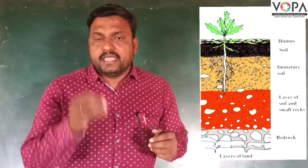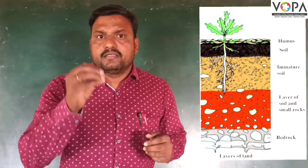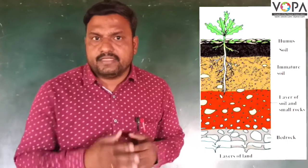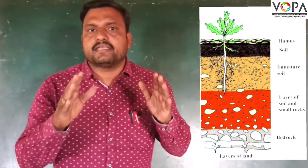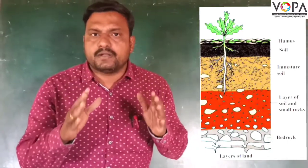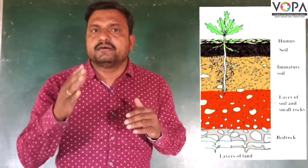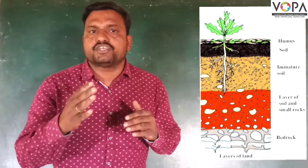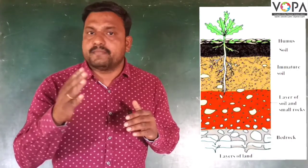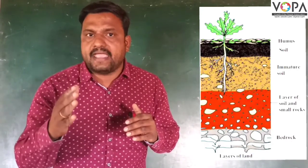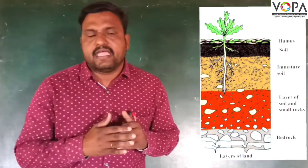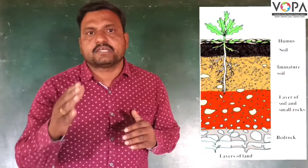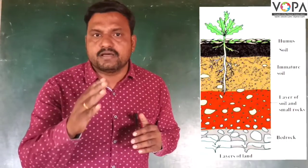In a diagrammatic way, the topmost layer is formed by the decomposition of remains of plants and animals, and this layer is called humus.